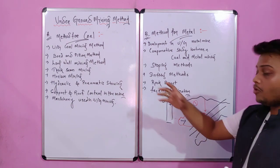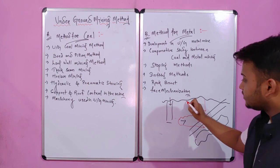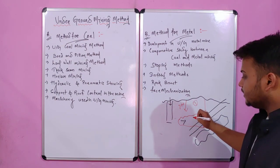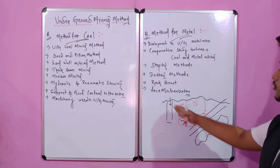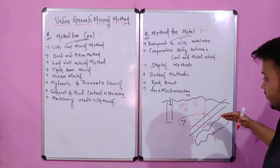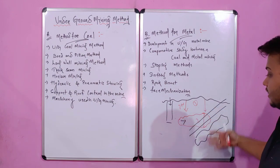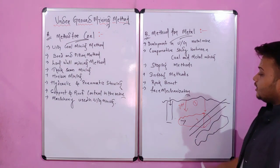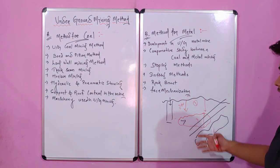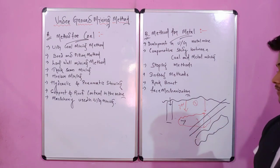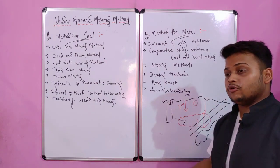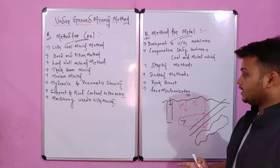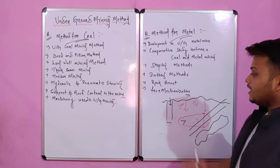Then comes the open cast method. When the mineral is at a depth of about 100 to 200 meters, we have to remove all of the overburden over the minerals. Then we are able to extract these minerals and it must be economical.